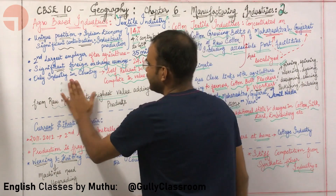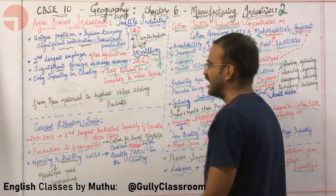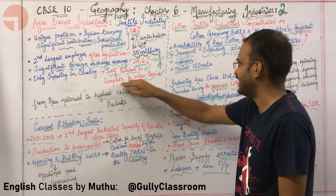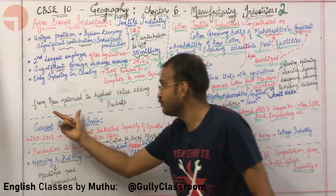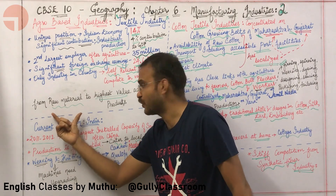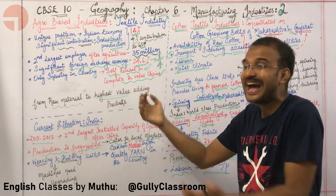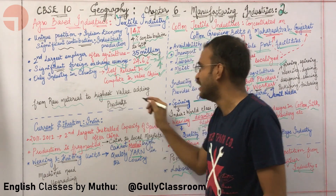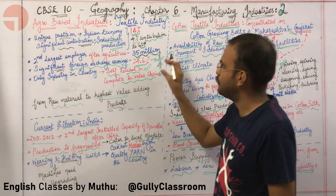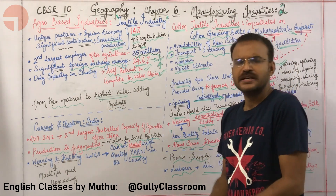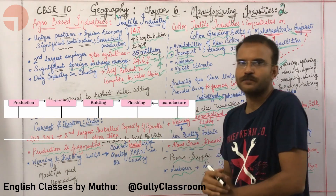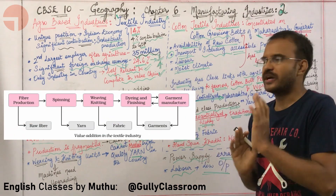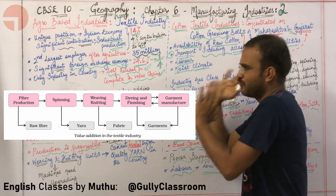Textile industries are in fact the only industry in India that is completely self-reliant in its entire value chain — from the production of raw material to adding value and converting it into a finished good. Let us have a flow chart showing how this self-reliance works.